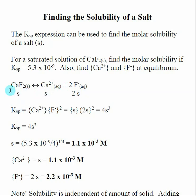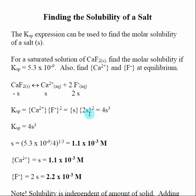Once we have our dissociation reaction, we write the solubility product — products divided by reactants. In a solubility product, the solid does not appear. We raise to the stoichiometric coefficient, so KSP equals the concentration of calcium times the concentration of fluoride squared. Just like other equilibria, we plug in the algebraic expressions: S for Ca²⁺ and 2S for F⁻, giving us this algebraic expression.